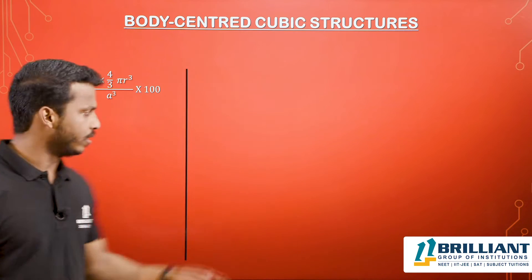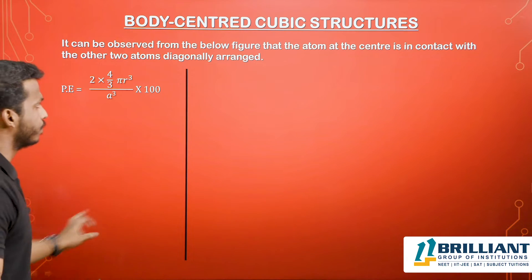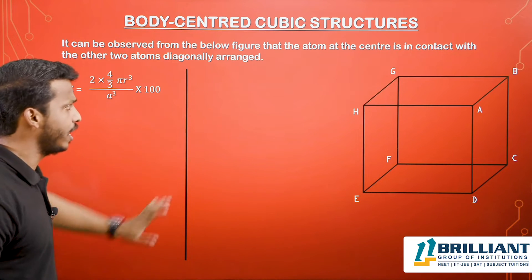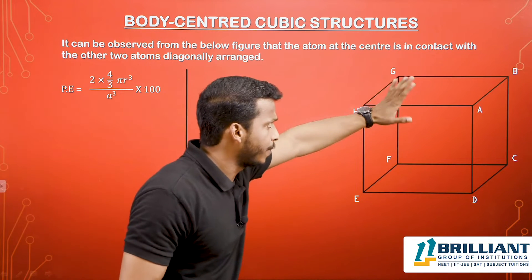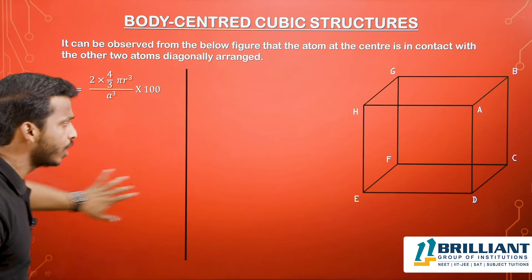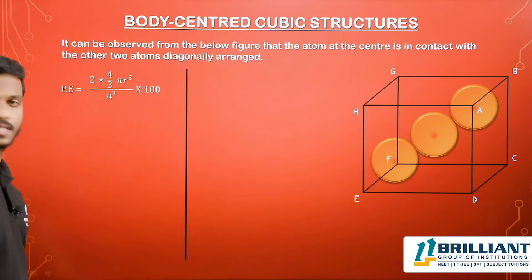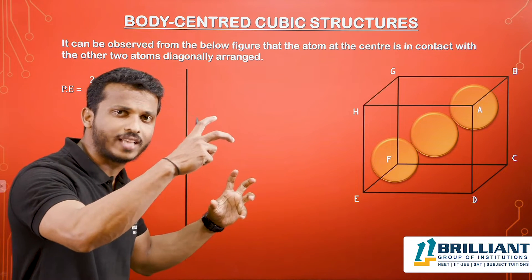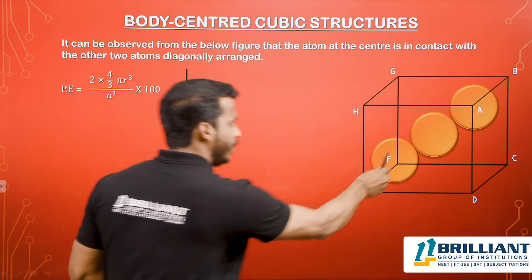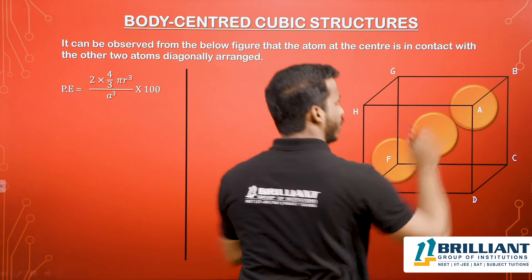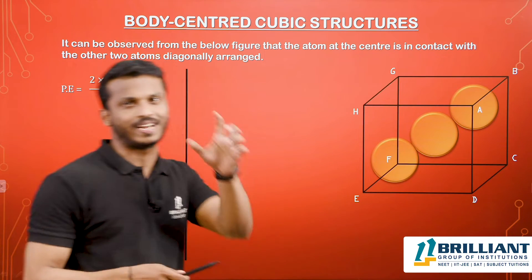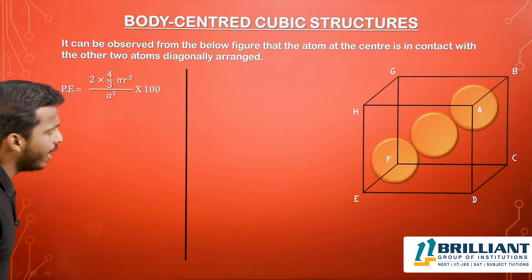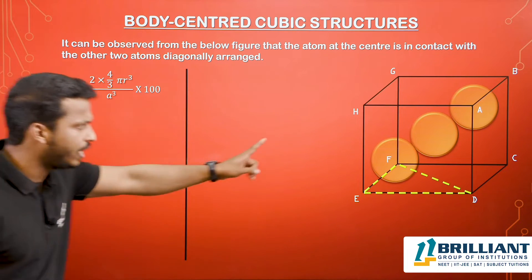Now let's look at the diagram with some triangles. This is the unit cell with corners labeled A, B, C, D, E, F, G, H. We place spheres here — two spheres at the corners and one sphere at the center of the body. We are going to consider a triangle EFD. This is the smallest triangle in the body centered system.